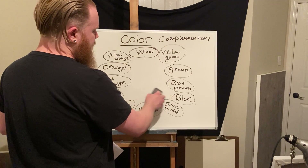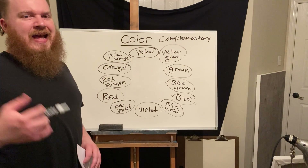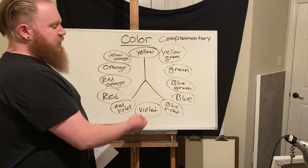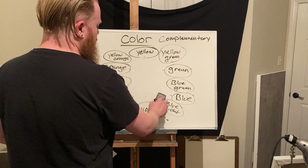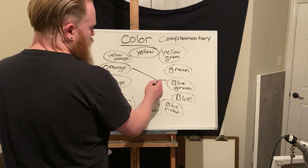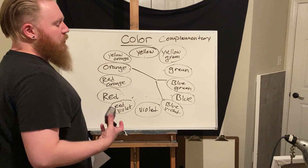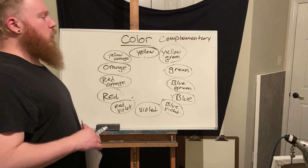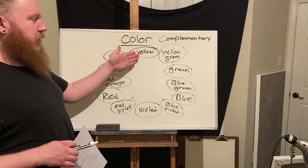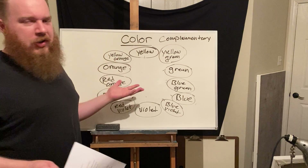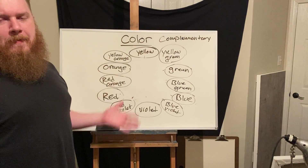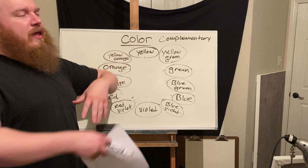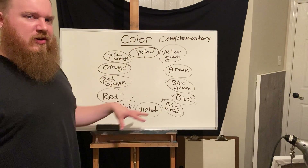There is also a split complement color scheme — using one color and then splitting its complement on the wheel. For example, instead of just using yellow and violet, you might use yellow with red-violet and blue-violet. Or you could use orange with blue-green and blue-violet. This gives you a wider, harmonious range of colors to work with while maintaining overall color harmony.